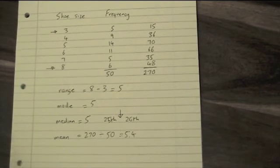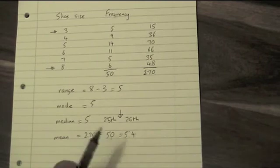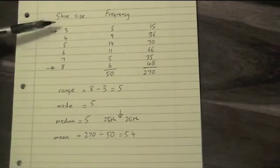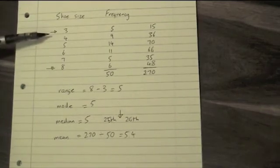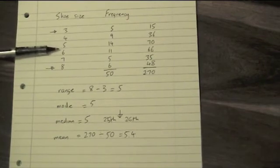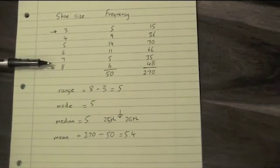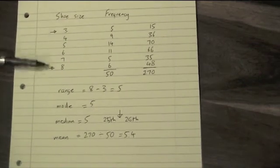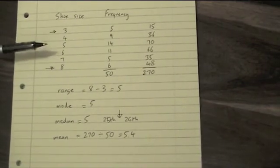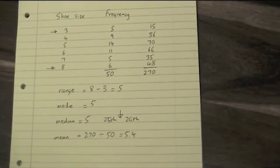Finally, do these answers make sense? 5.4 is the average, and an average should be somewhere in the middle of our range of values. Our values go between 3 and 8, and 5.4 is right in the middle, so we should be confident we've done this right. If you got a value like 27, you'd know it's wrong — you can't average these numbers and get 27. So at the end of the question, look at your answer and ask yourself: have I got this right? If not, go back and check it.